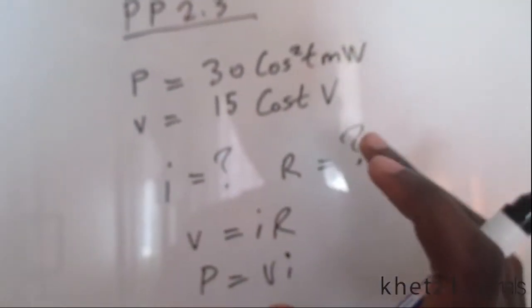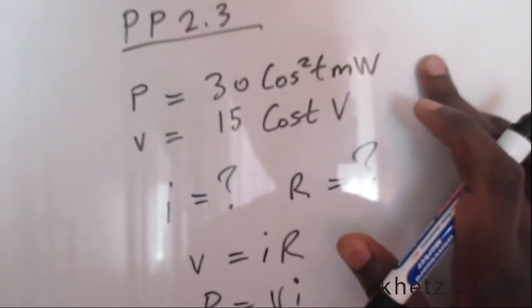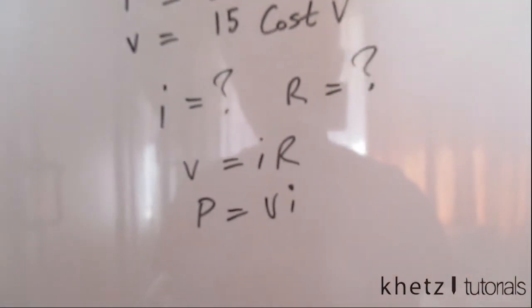Now if you can check what we're given here, you can simply plug these values into one of the formulas to find any of the variables. So let's start with finding the current.